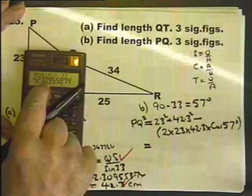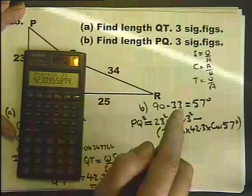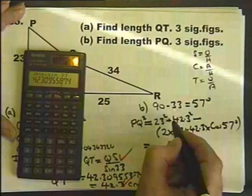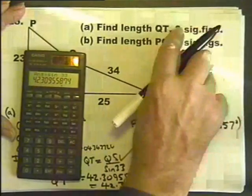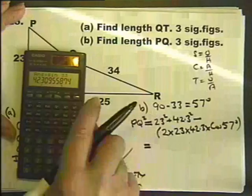That's how I think of it. I want this side, I need two sides and included angle. That squared plus that squared minus two times that times that times the cosine. Now,